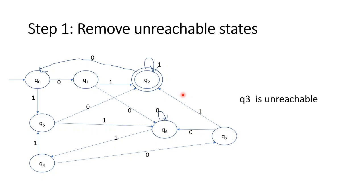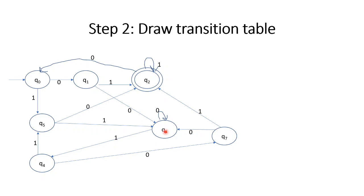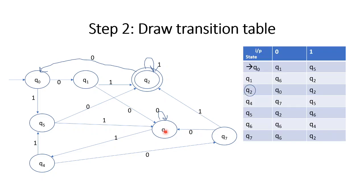We will remove Q3's connections and update the DFA. We will take this updated DFA and draw the transition table from it. This is the transition table.